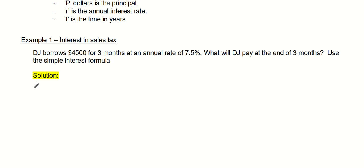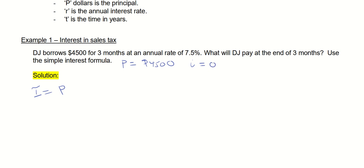We're going to find the interest for one year. So I for interest equals P for principal - your principal is the initial starting amount, which is $45,000 - multiplied by the interest rate. Whenever you have a percentage, you should always convert it into decimal form: 0.075. That's in its decimal form.